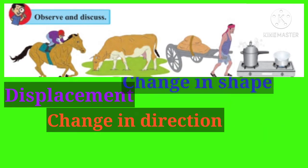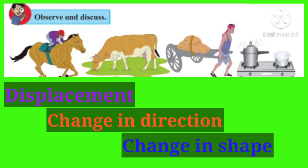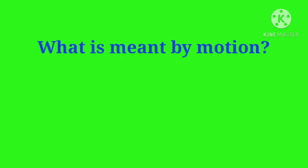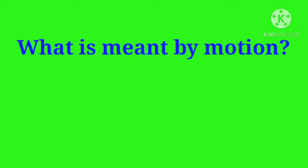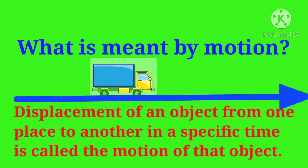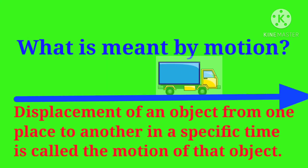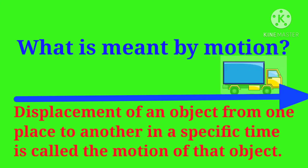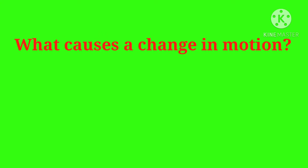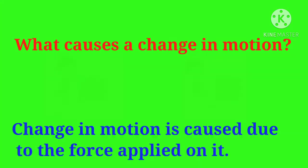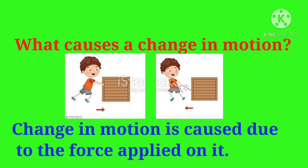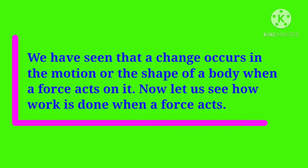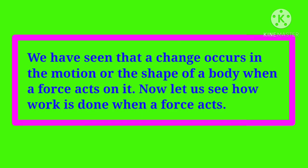Let's recall what is meant by motion. Displacement of an object from one place to another in a specific time is called the motion of that object. What causes a change in motion? A change in motion is caused due to the force applied on it. We have seen that a change occurs in the motion or the shape of a body when a force acts on it.